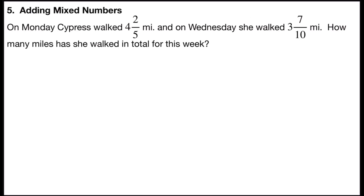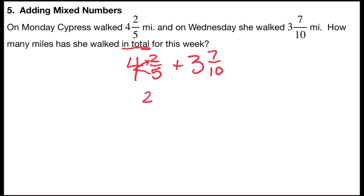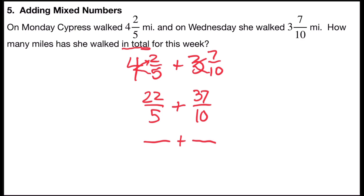Problem number five is adding mixed numbers. On Monday, Cypress walked four and two-fifths miles, and on Wednesday she walked three and seven-tenths miles. How many miles has she walked in total for this week? The words in total indicate addition, so I'm going to add four and two-fifths plus three and seven-tenths. I'll change these into fractions: four times five is twenty, plus two is twenty-two-fifths; ten times three is thirty, plus seven is thirty-seven-tenths. Since ten is a multiple of five and it's larger, both denominators will be ten.